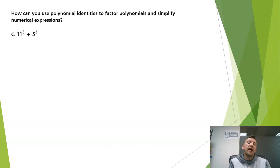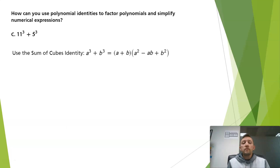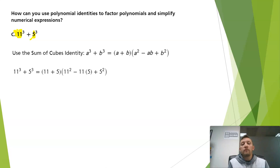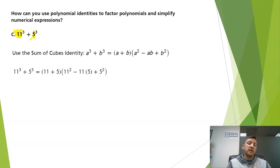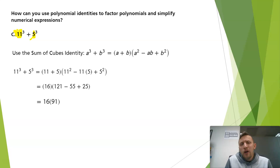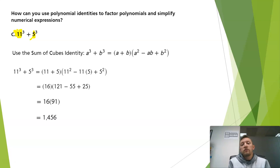We could also use this to compute 11 cubed plus 5 cubed without a calculator. This is a sum of two cubes with a equals 11 and b equals 5. We get 11 plus 5, times 121 minus 55 plus 25, which simplifies to 16 times 91, or 1,456. That said, this isn't typically how we'll be using these identities — it just illustrates the point.